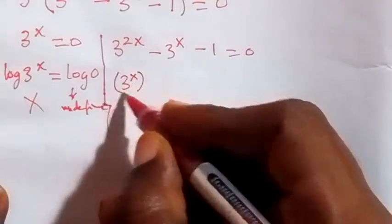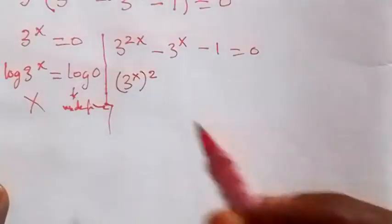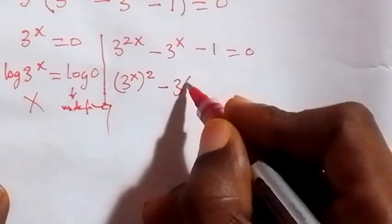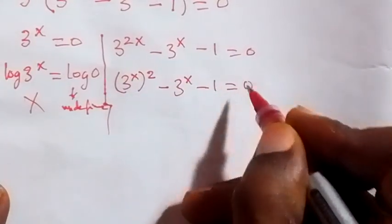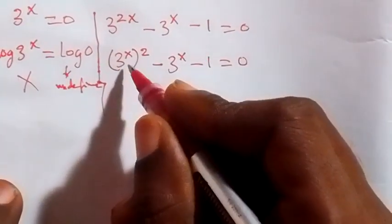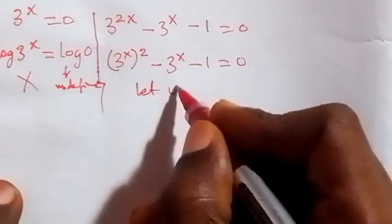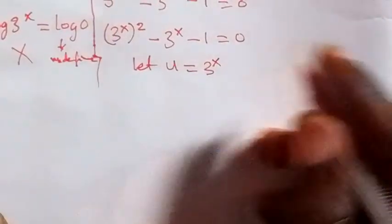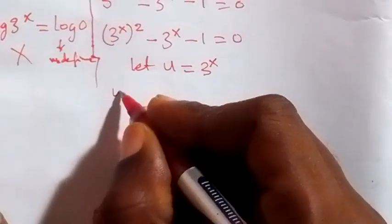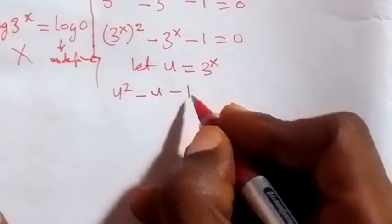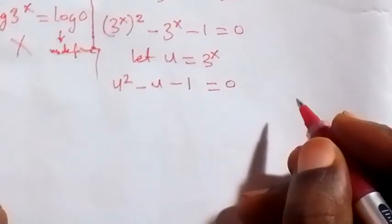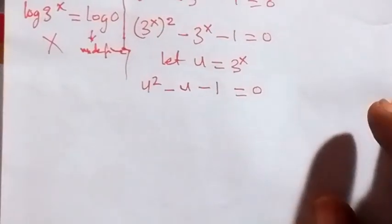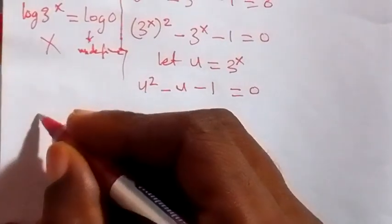So now from the second factor, we can rewrite 3 raised to power 2x as 3 raised to power x, then raised to the power 2, from the law of indices since the powers multiply. So letting u equal 3 raised to power x, we write this equation in terms of u: u squared minus u minus 1 equals to 0.